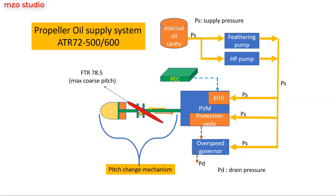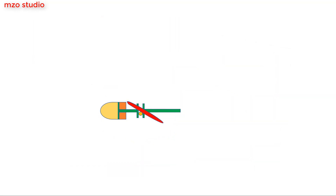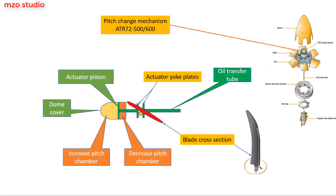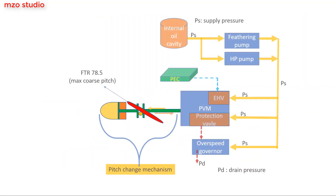The propeller oil supply system consists of the propeller valve module (PVM), feathering pump, HP pump, overspeed governor, and pitch change mechanism. The pitch change mechanism consists of an oil transfer tube, actuator piston, yoke, increase chamber, and decrease chamber.